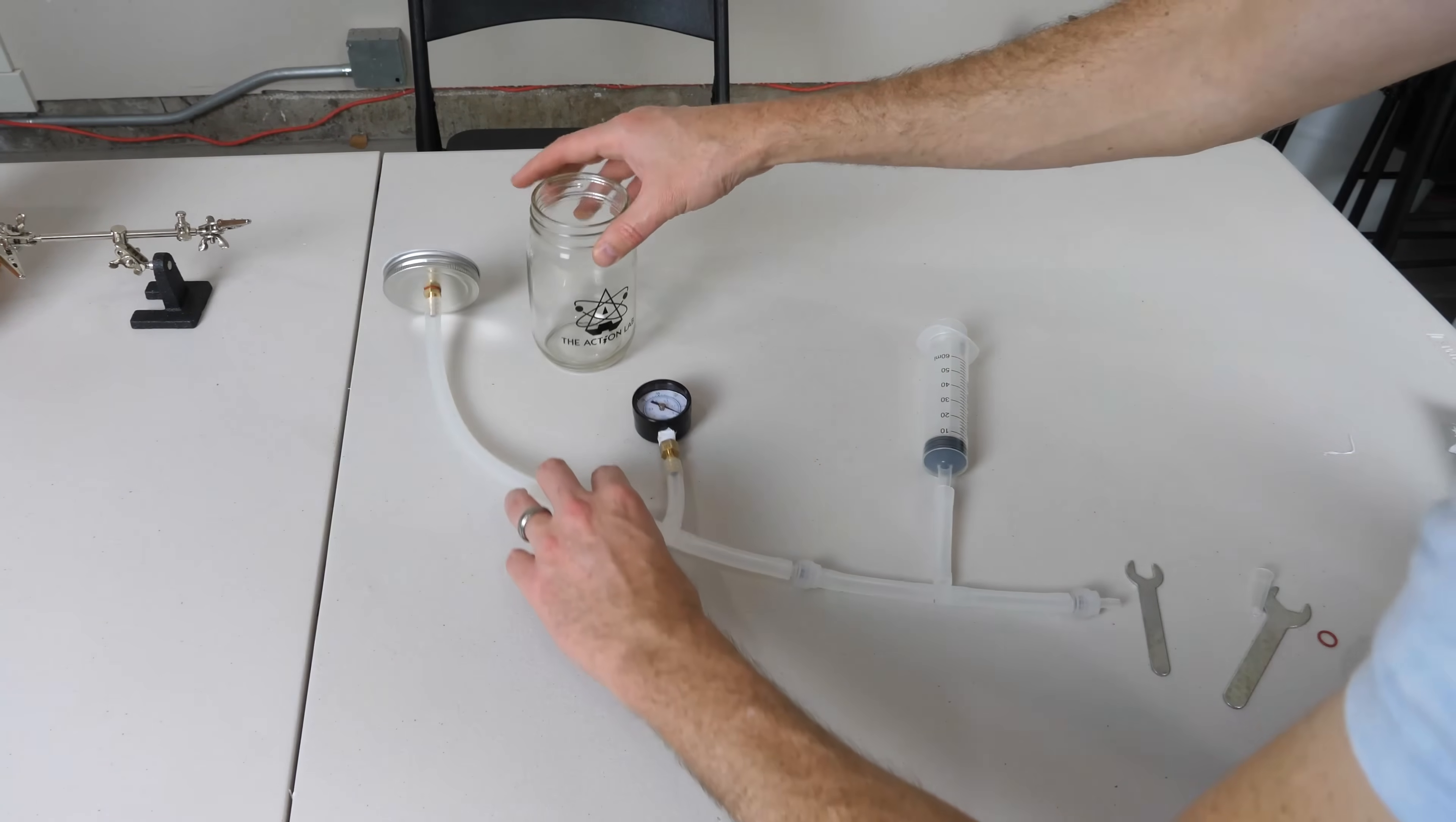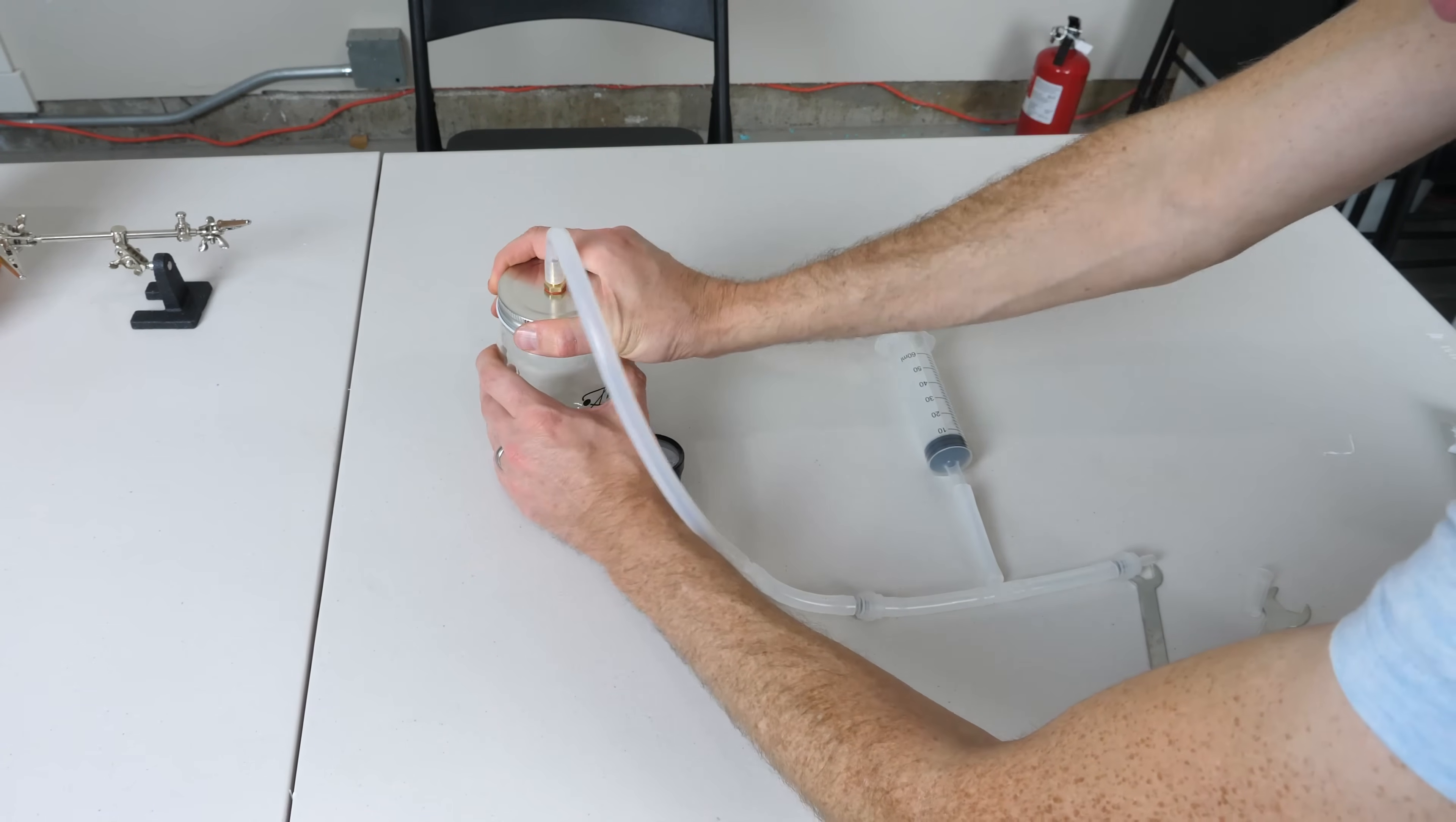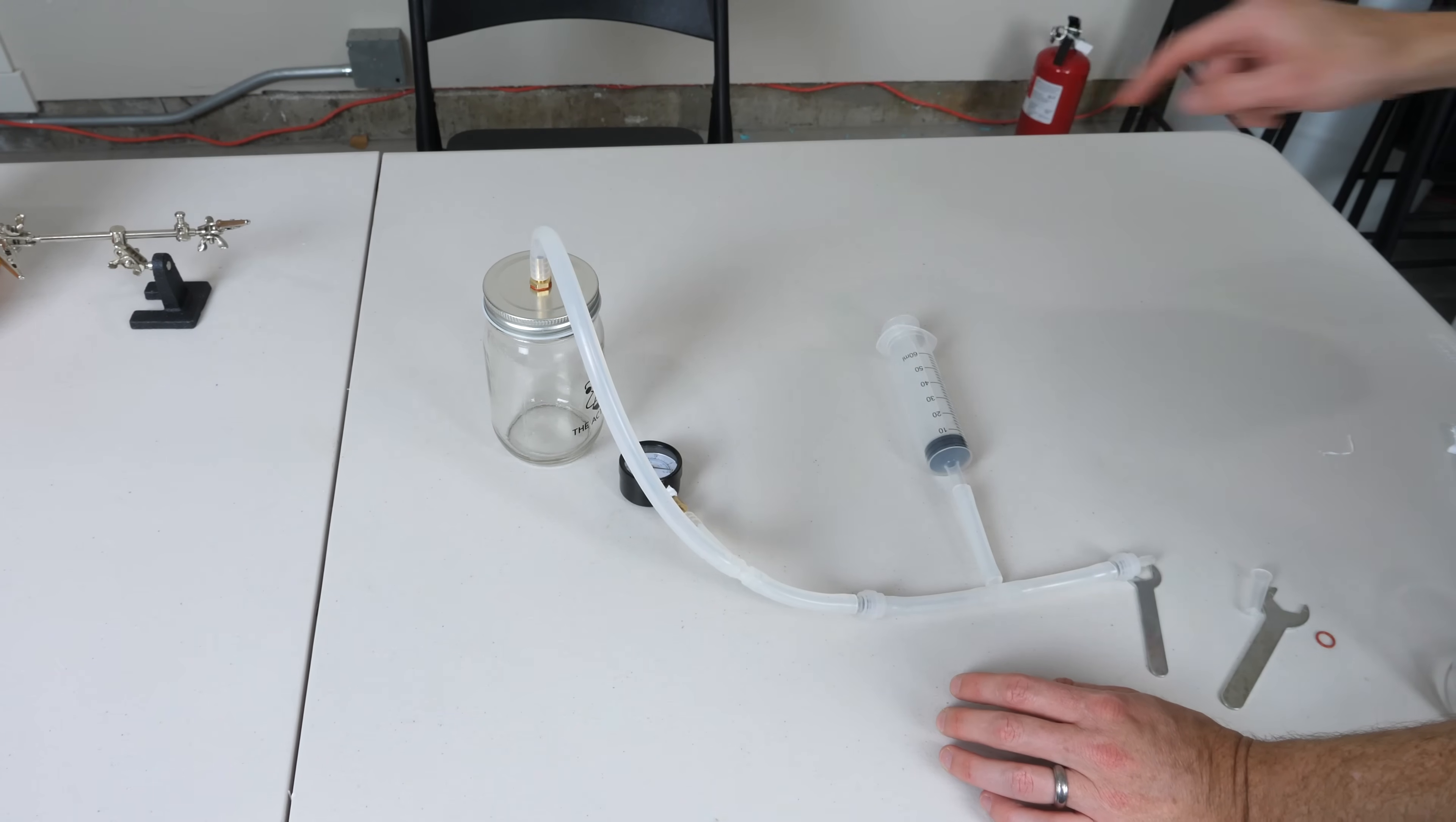So now that it's fully assembled, you can put the lid on your vacuum chamber. As you screw it, it's best to hold the lid in place and then turn the jar beneath it. That way you don't turn this and loosen your nut and break the vacuum seal right there.